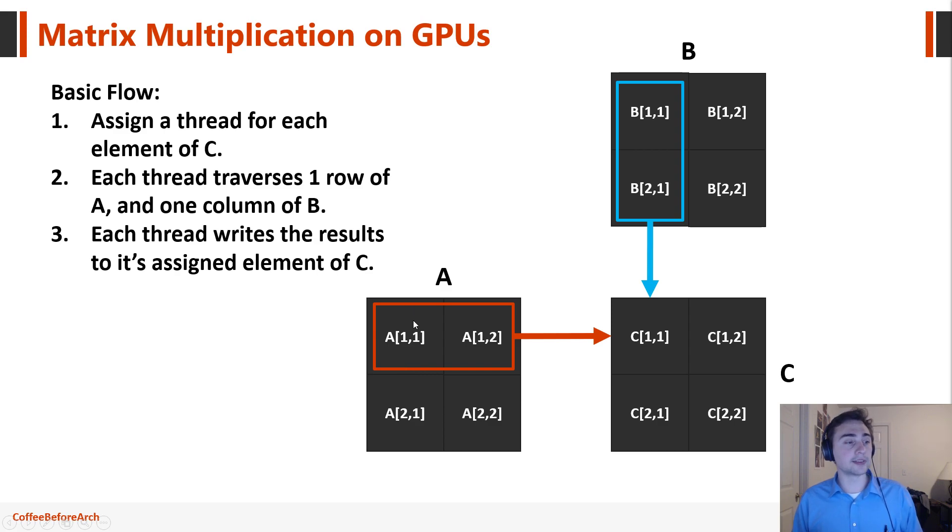So in this case, we'll have a single thread. Remember, when we're talking about these threads, every thread will do a unique pair of rows and columns. So one thread will do this row and this column, the next thread will do say this row and the next column, and then another one will do a different row and the first column again, and it will do this different row and the last column. And so that will give us all four results.